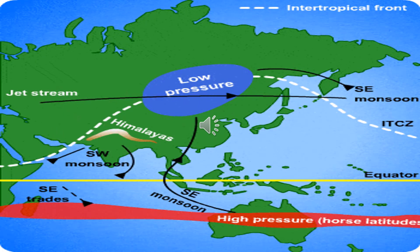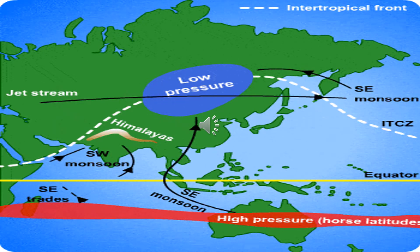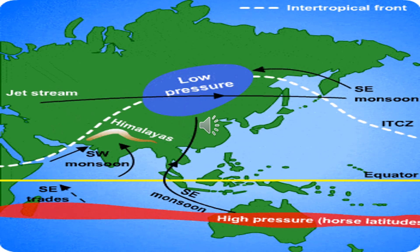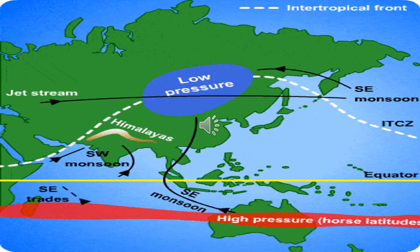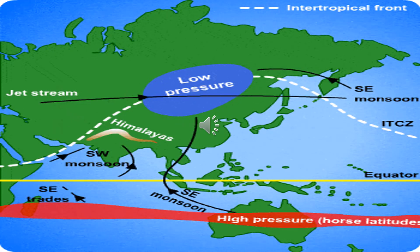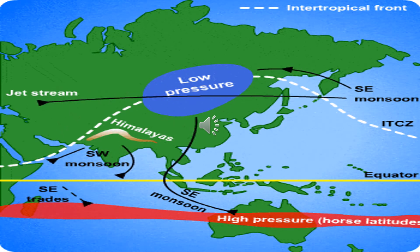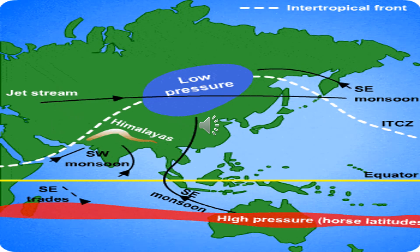During the summer months, the land heats up and extreme temperatures are experienced in both India and Pakistan. This extreme temperature causes the air above the land to heat up, and the heated air rises up, leaving behind a low pressure zone. This low pressure zone attracts wind from the high pressure zone prevailing in the adjacent water body.